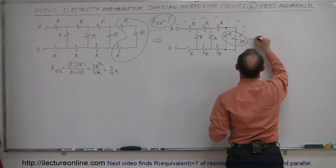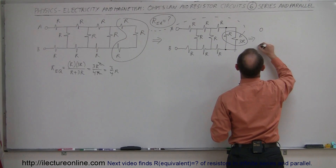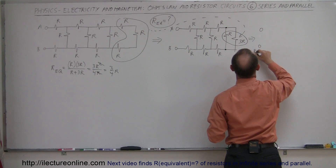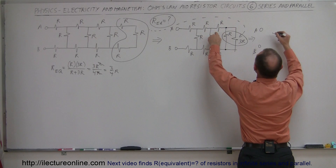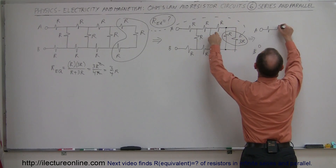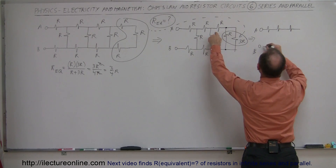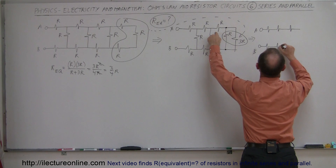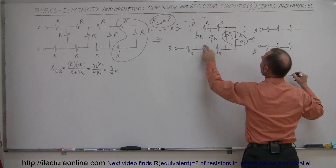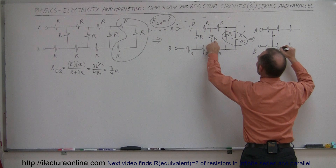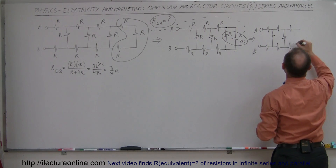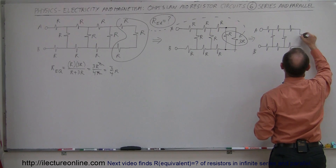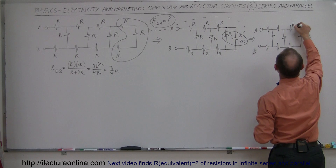So these two resistors combined turn into a single equivalent resistance of 3/4 R. Let's draw that. The next circuit we now have — we have A and B terminals — we still have these three resistors. We still have this resistor and this resistor, but now those two combined form a single resistor back here which is now 3/4 R. Everything else is still R.